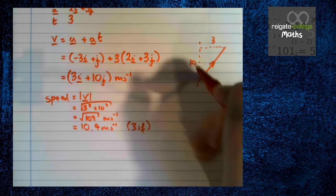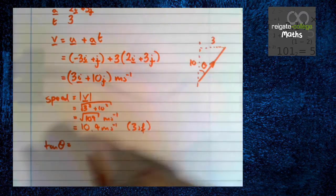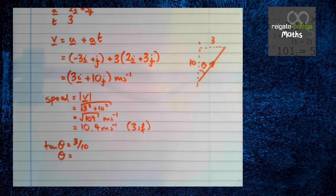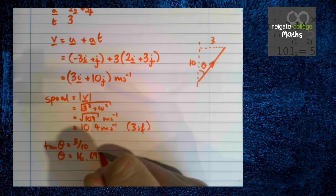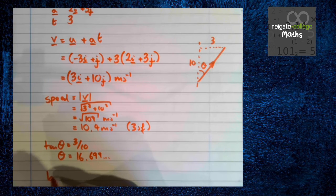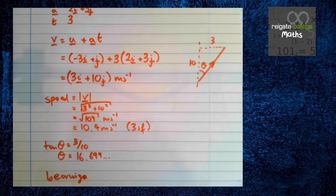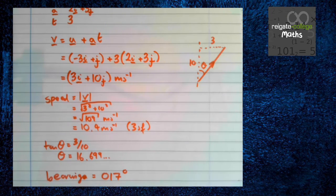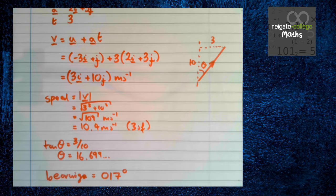So with the bearing, let's call it theta. We know that tan theta is opposite over adjacent. So theta is inverse tan of 3 over 10, so 16.699 and some stuff. Remember, bearings must be given as three digits relative to north with no decimals. So it's moving at a speed of 10.4 meters per second on a bearing of 017 degrees.